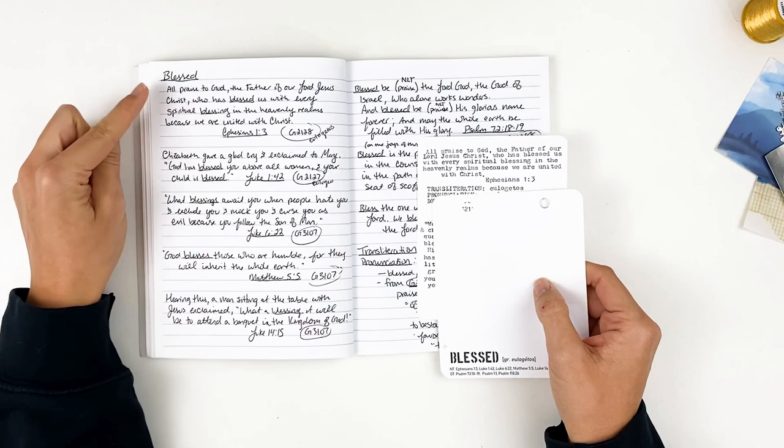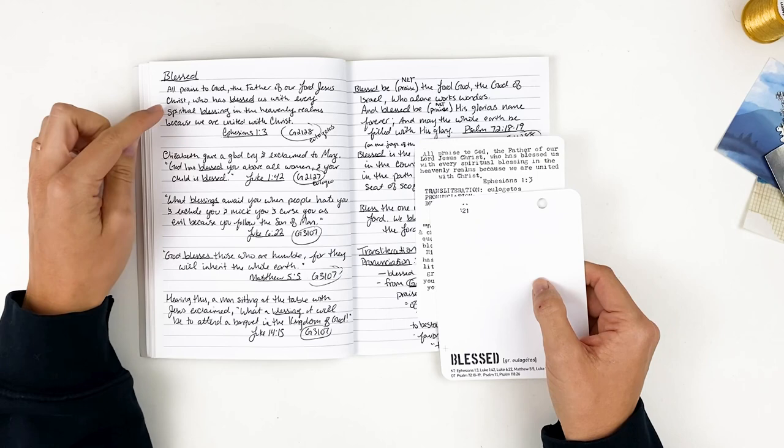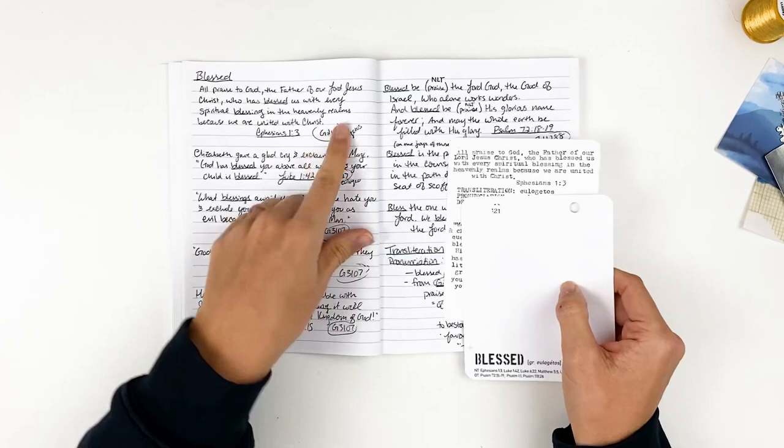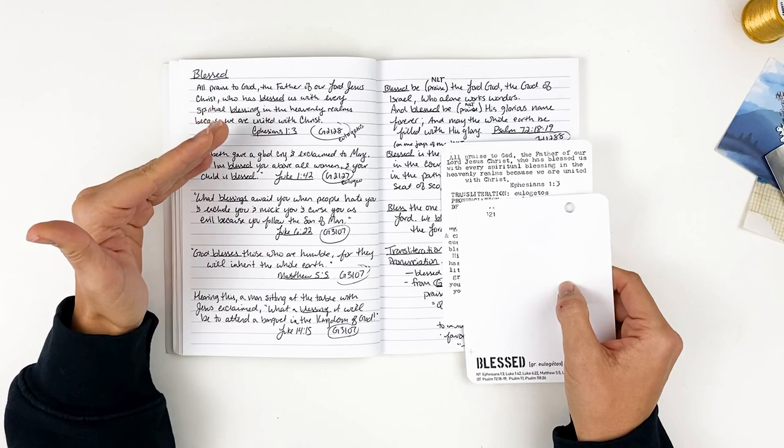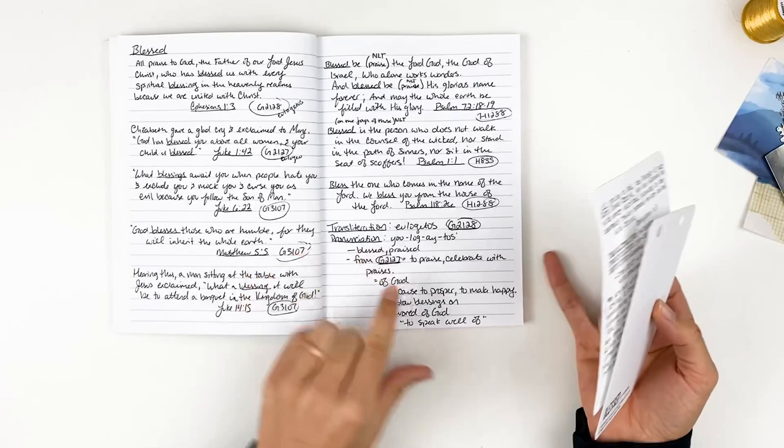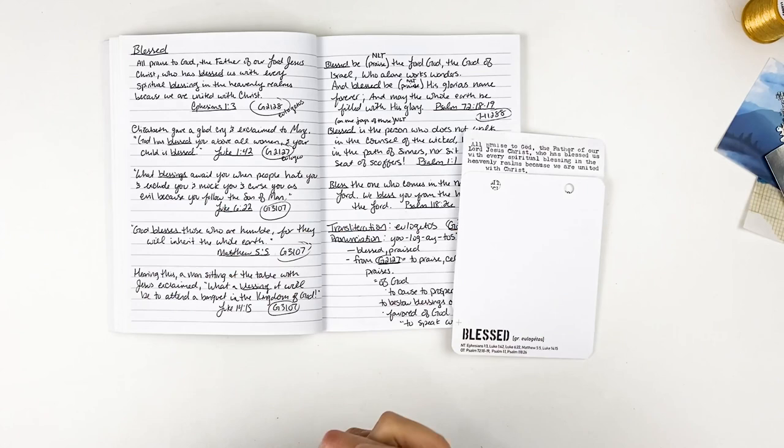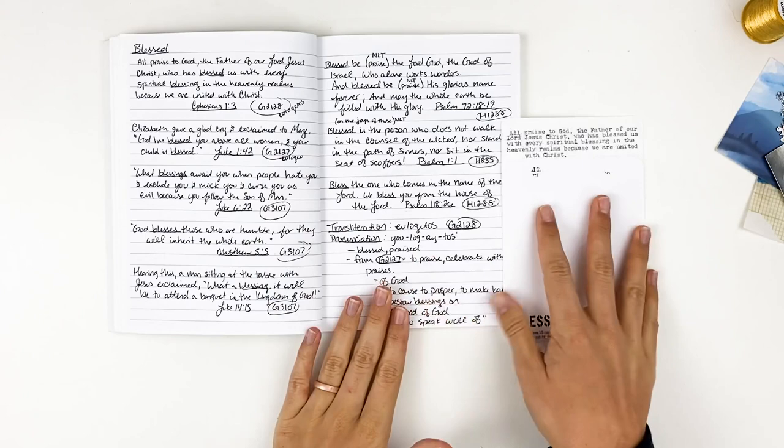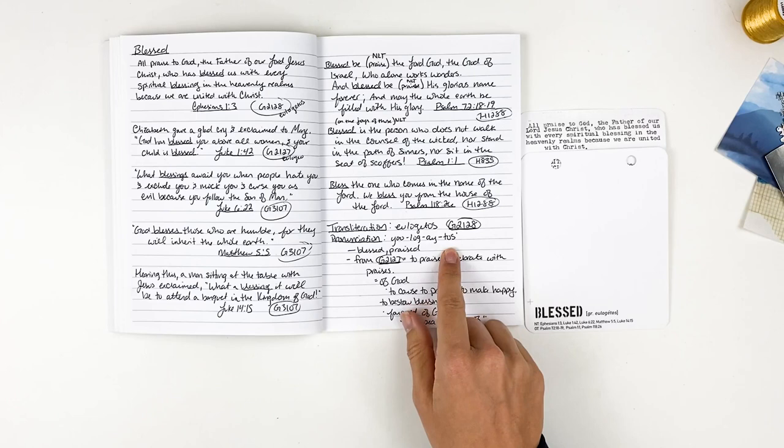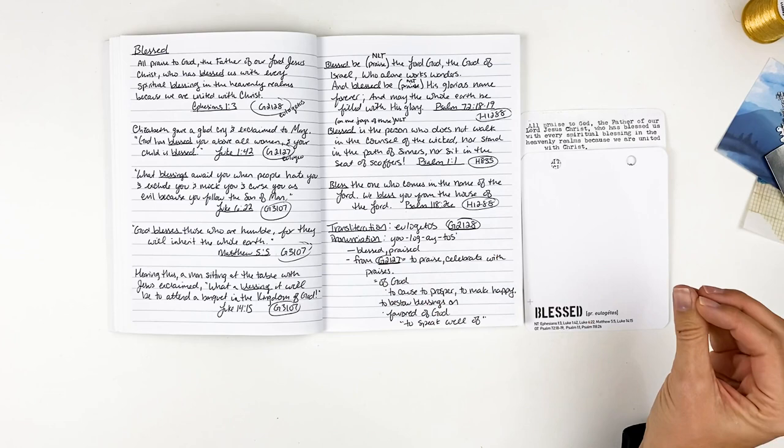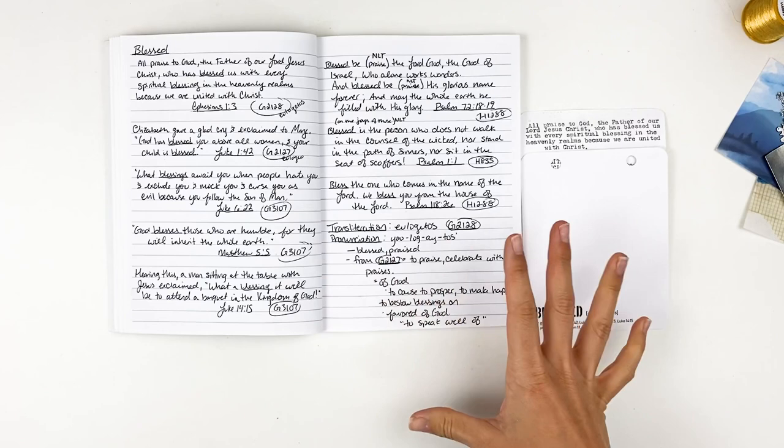So for the verse, the first verse that's listed is Ephesians 1:3. And that says, all praise to God, the Father of our Lord Jesus Christ, who has blessed us with every spiritual blessing in the heavenly realms because we are united with Christ. So in this verse, Ephesians 1:3, is the eulogatos Greek word is used for the word blessed. And then as I kind of started to do my study, I found this word eulogatos is actually the root word is a different word.